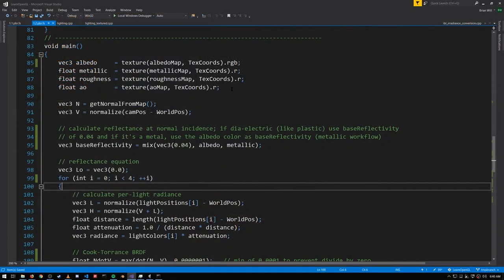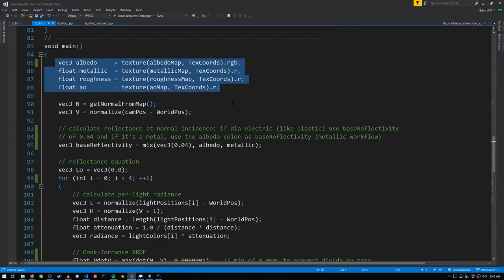So if we want to use these textures instead of the uniforms like we had before, what that looks like in code is very straightforward. We just sample from the appropriate textures.